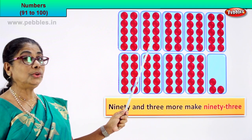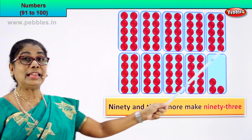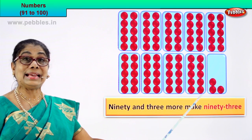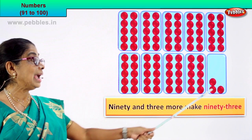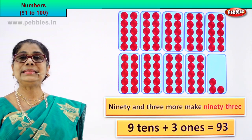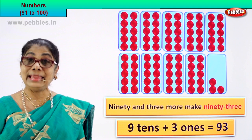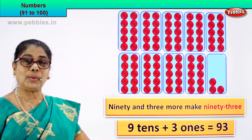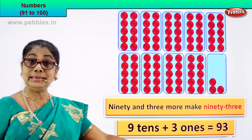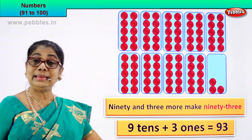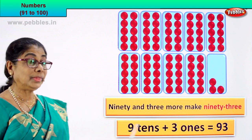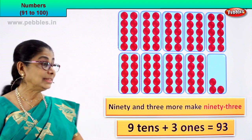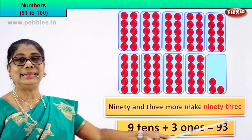One ten, two tens, three tens, four tens, five tens, six tens, seven tens, eight tens, nine tens — that is 90. And we have three ones. So nine tens plus three ones equal to 93. The numeral is 93. How do we write the number name? 93.